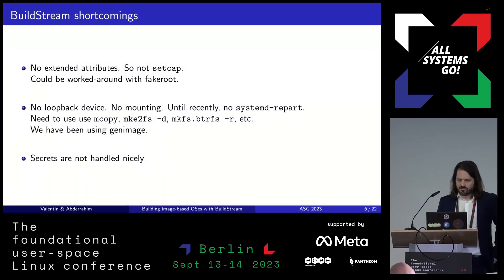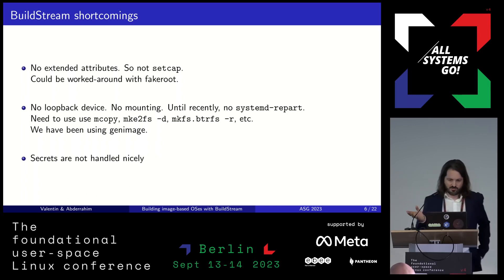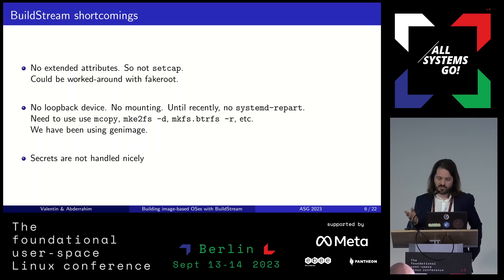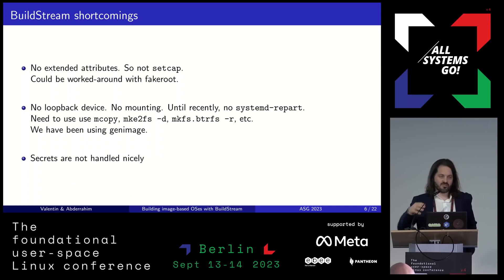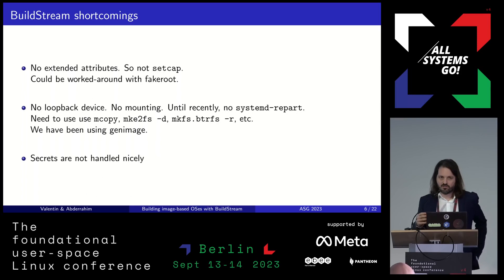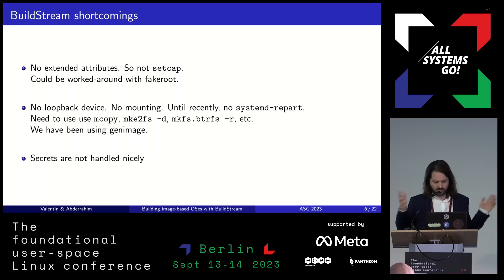There are a few things when you come to building an OS that are a bit difficult with Buildstream. There are no extended attributes, so for example setcap doesn't work. There are workarounds using fakeroot, but it's not very nice. In the case of GNOME OS, there are only a few binaries where we just use setUID instead of setcap instead of having to go through fakeroot. But hopefully this will be fixed one day.